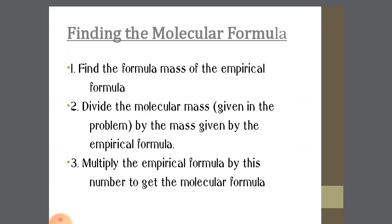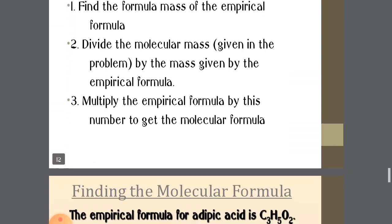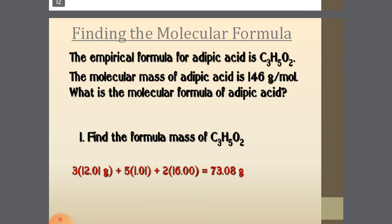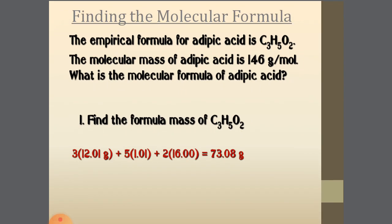To find the molecular formula once you have the empirical formula: find the formula mass of the empirical formula, then divide the given molecular mass by the empirical formula mass. For adipic acid, the empirical formula C₃H₅O₂ gives: 3×12 + 5×1 + 2×16 = 36 + 5 + 32 = 73. The given molecular mass is 146.